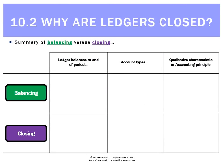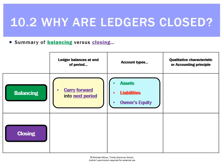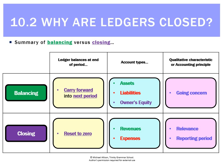In summary: when balancing a ledger, balances at the end of the period carry forward into the next period. We do that for assets, liabilities, and owner's equity, justified by the going concern principle — we assume the business will exist forever. Closing is different: instead of carrying balances forward, we reset them to zero. We do that for revenues and expenses, justified by relevance and the reporting period principle.